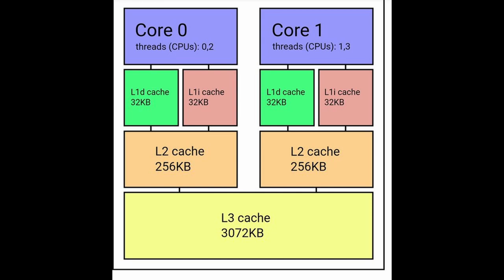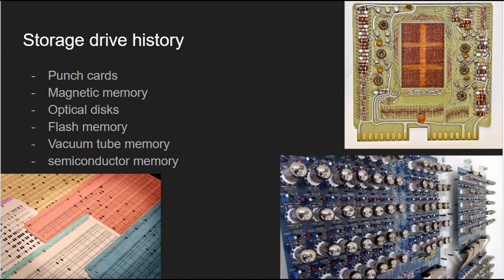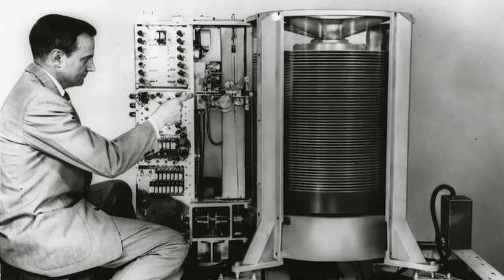History of Storage Drives. In the beginning, computers used punch cards for storage, which were slow and had limited capacity. In the 1950s, the first hard disk drive was developed by IBM. This early hard drive used magnetic disks to store data and could store up to 5 MB of data. Hard drives quickly became the primary storage medium for computers, and advancements in technology led to the development of smaller and more efficient hard drives.